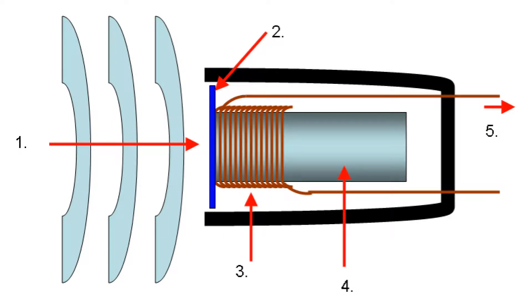Let's start with the dynamic microphone. We have an illustration to show you how it works. As the sound waves — number one — come into the microphone, they hit and move the diaphragm, the blue part, number two. The diaphragm is attached to the coil, number three, which moves back and forth over a magnet, number four, and creates an electrical signal that's sent out to the mixer.